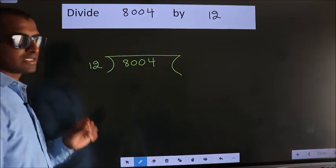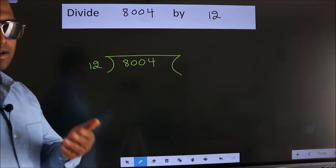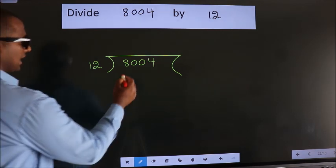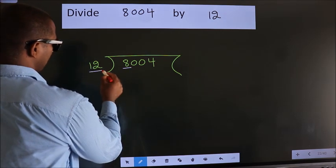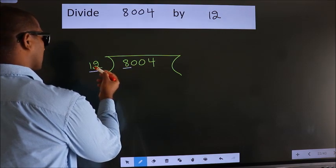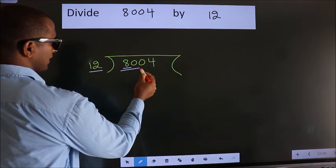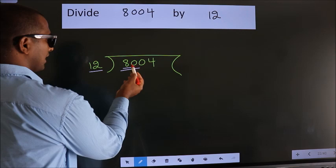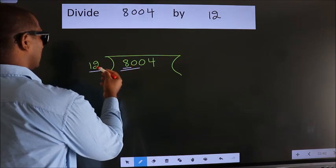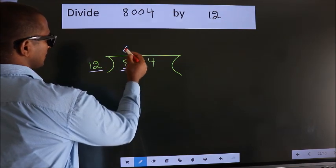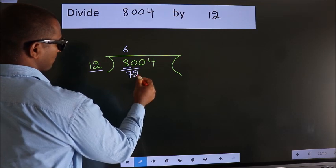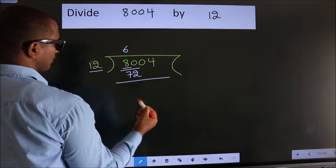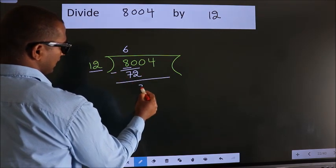This is your step 1. Next, here we have 8, here 12. 8 is smaller than 12, so we should take two numbers: 80. A number close to 80 in the 12 table is 12 times 6 is 72. Now we should subtract. We get 8.